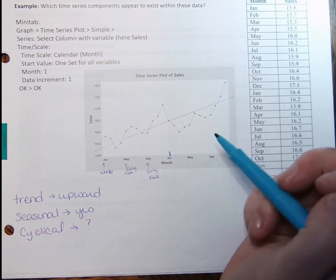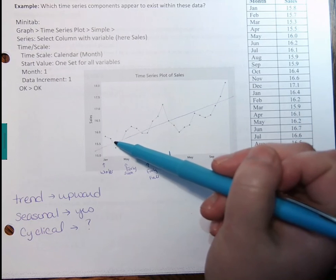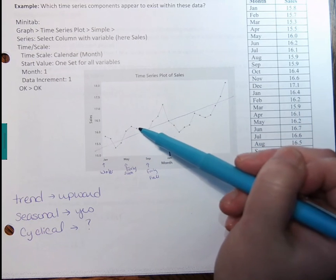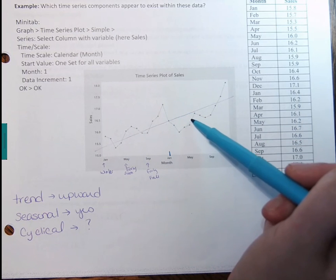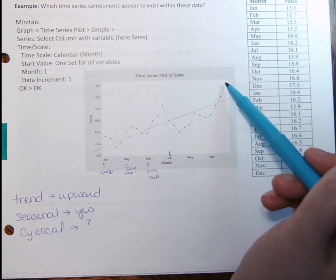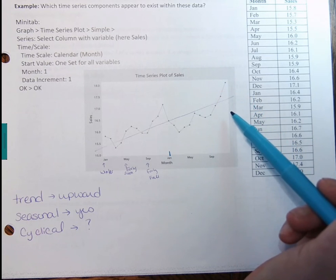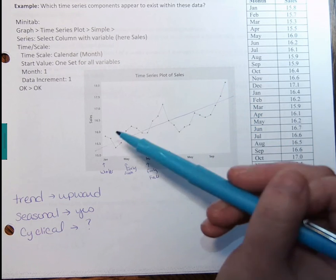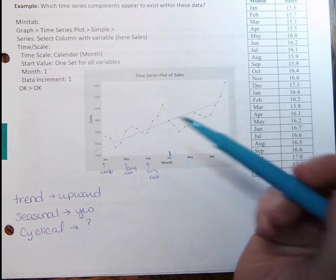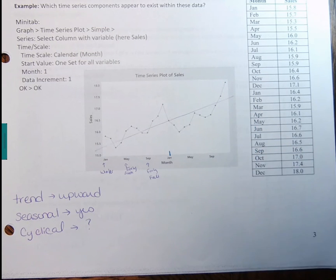So notice, right after January, we dip, we go up in May, we continue to go up to September. Dip in January, go up in May, up in September. And more than likely, if we had January data, we would probably dip again some. So there is a seasonal effect here. And we only have two years worth of data. So seeing a cyclical one would be difficult for this plot.